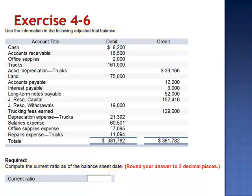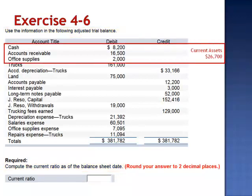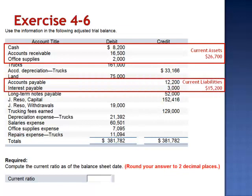The current ratio is calculated by taking total current assets — in this case $26,700 — and dividing by total current liabilities, $15,200.